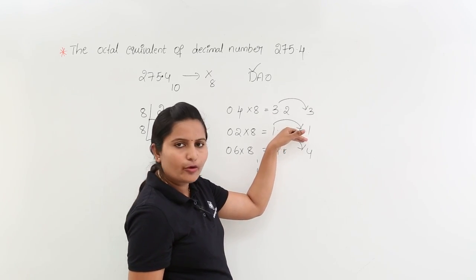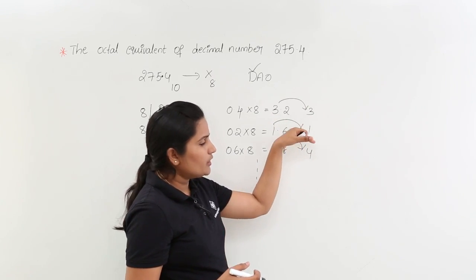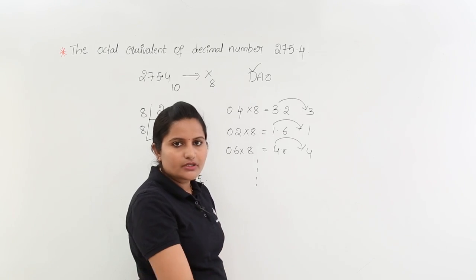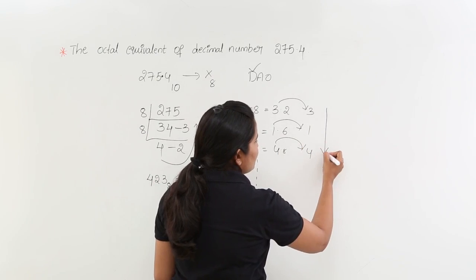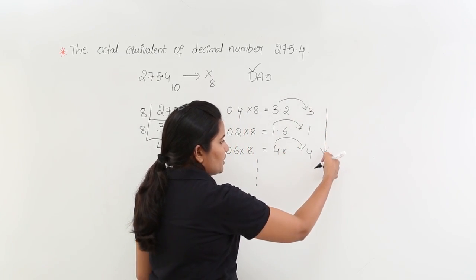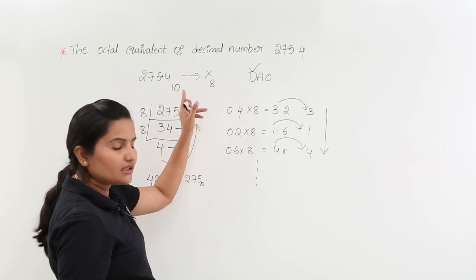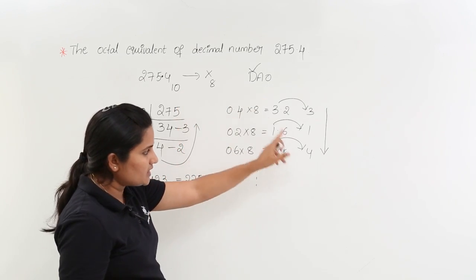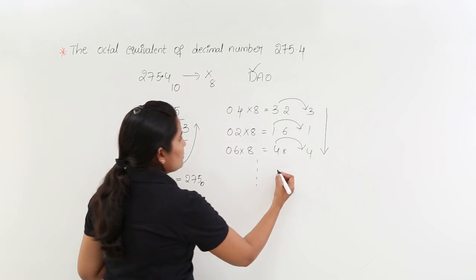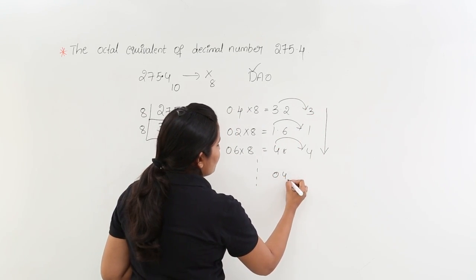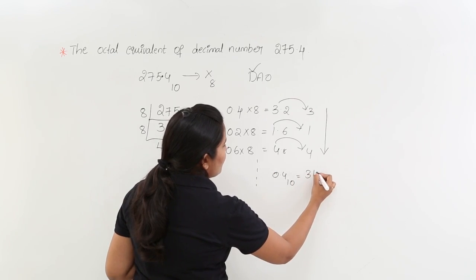If you see only 2 digits after the decimal point in your options, then stop at 2 multiplications. That is dependent upon the options given to you. When considering the result for multiplication, you read from top to bottom, whereas for division you read the result from bottom to top. So for 0.4 decimal, the octal equivalent is 0.314.